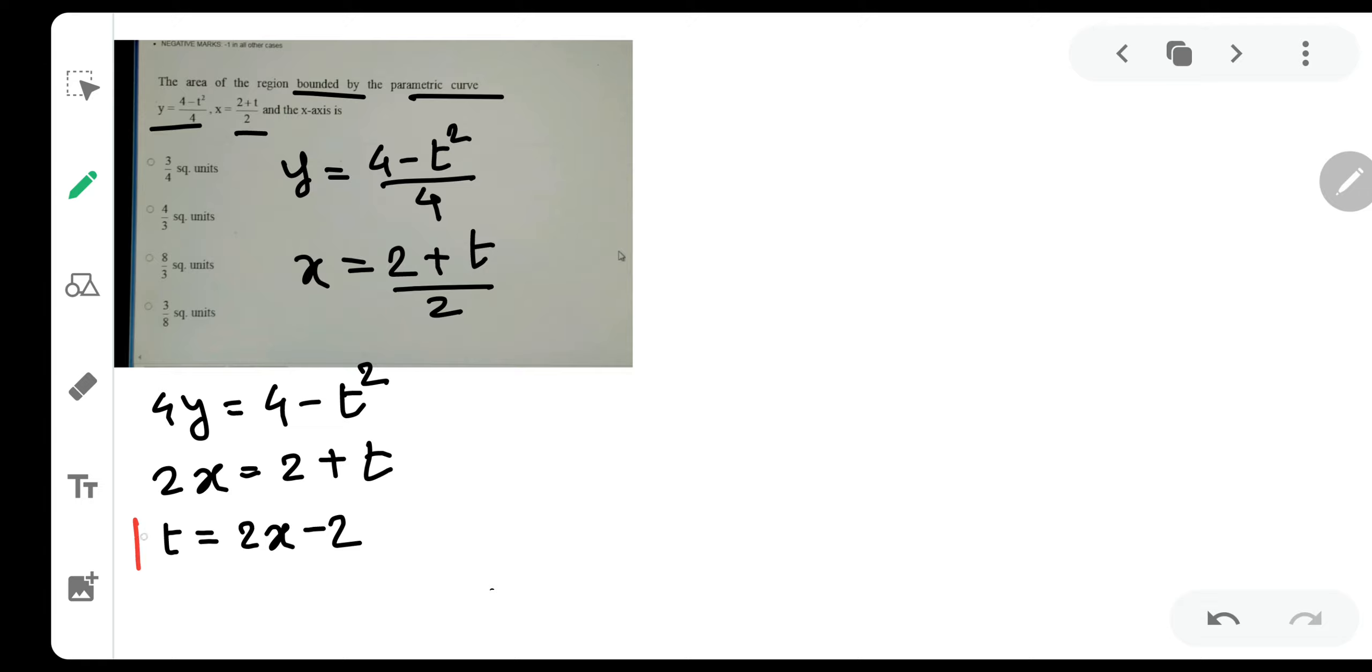Very important. I got the value of t in terms of x. Now I will utilize it. So 4y is equal to 4 minus t square. So basically t square would be equal to 4 minus 4 times y. Let me put the value of t as 2x minus 2.